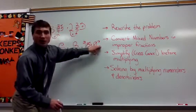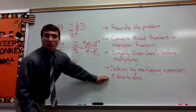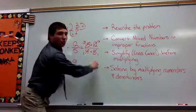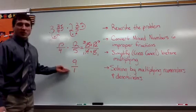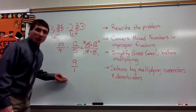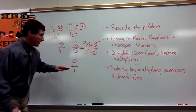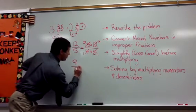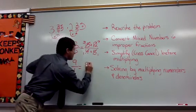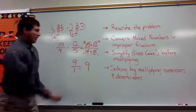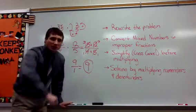Three times three equals nine, and multiply the denominators: one times one equals one. Finally, you want to simplify this — especially if it's an improper fraction like we see here, where the numerator is greater than the denominator. Nine over one is the same as nine whole. And that is how you solve multiplying mixed numbers. Hope this helped you out.